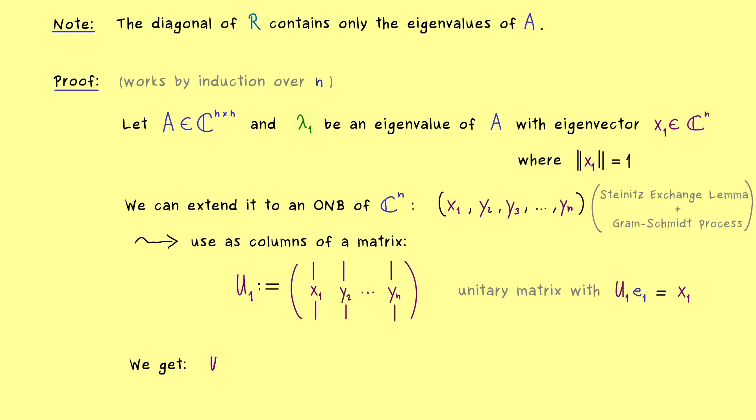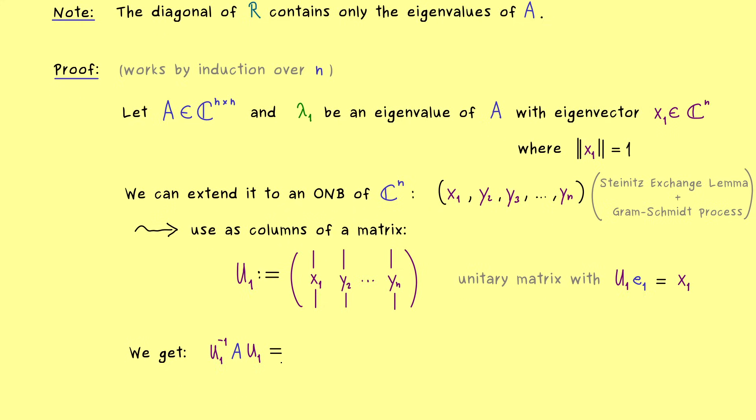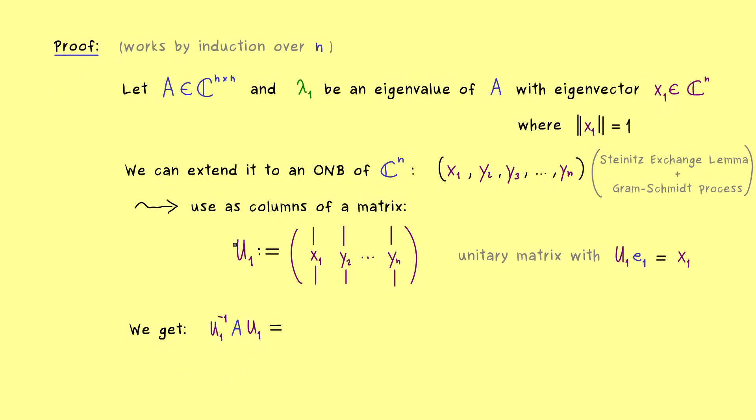So as always we apply our similar relation, which means U_1 inverse times A times the matrix U_1. Hence the matrix product on the right tells us that the matrix A acts on the columns of U_1. And crucially there, it also acts on x_1. So we get a matrix where the first column is Ax_1. And again, the other columns are not so important. We have Ay_2, Ay_3 and so on. And now we can just use the fact that x_1 is an eigenvector of A. Which means the first column is not changed in the direction, it's just scaled by lambda_1.